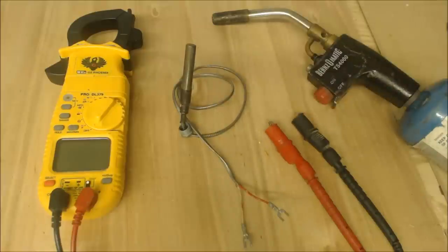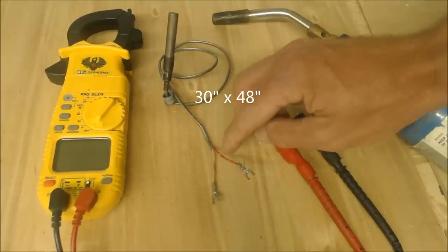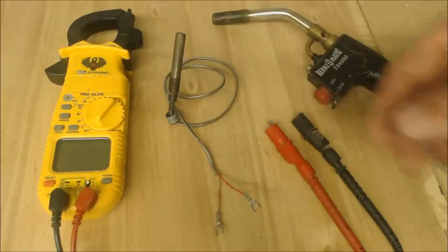These are found on those old floor furnaces in the hallway of some older houses where you have a 36 by 48 grill. The actual DC millivolt goes through the thermostat and back to the gas valve and closes the gas valve in order for the heat to turn on.